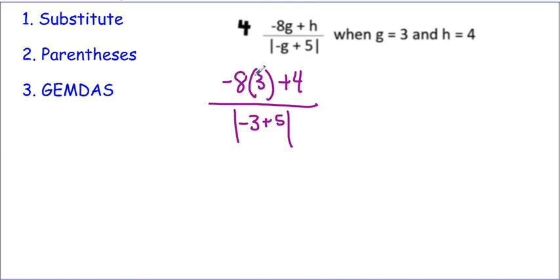The fraction bars are grouping, so we're going to simplify the numerator and then the denominator. So negative 8 times 3 is negative 24 plus 4 over, we have negative 3 plus 5, which is 2.